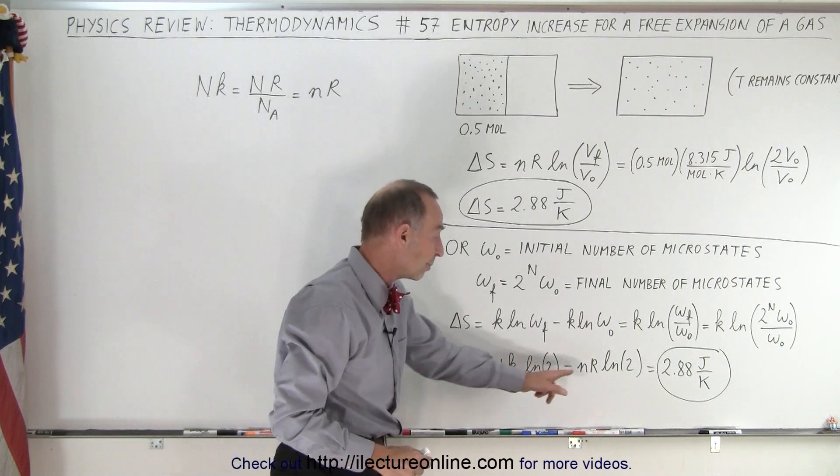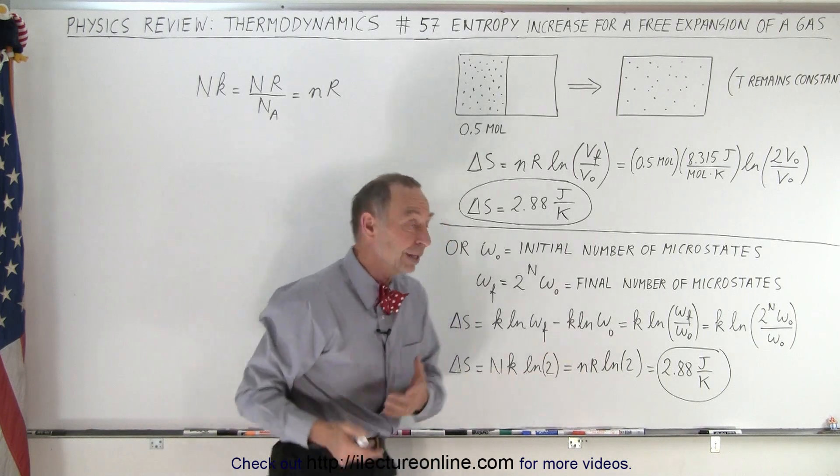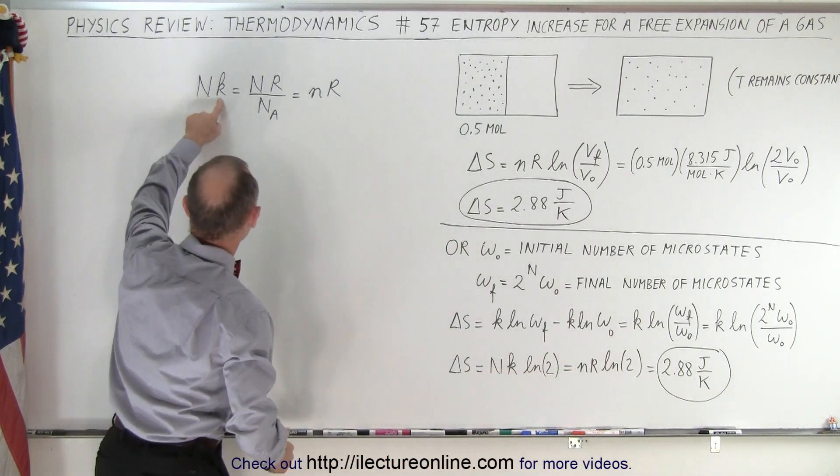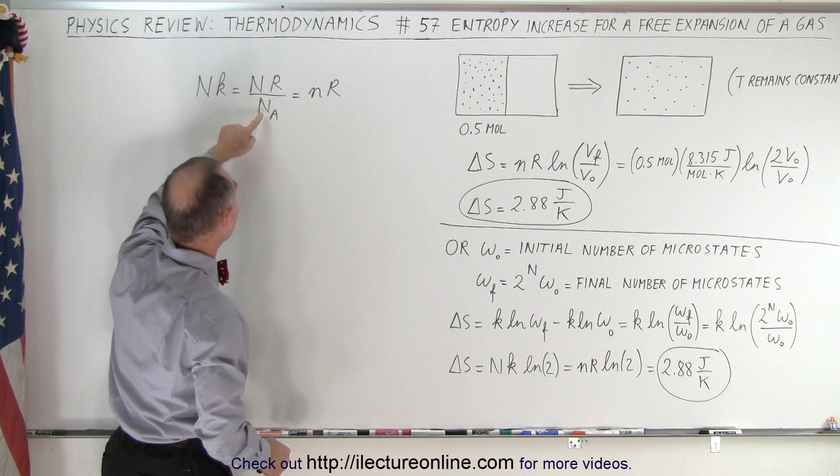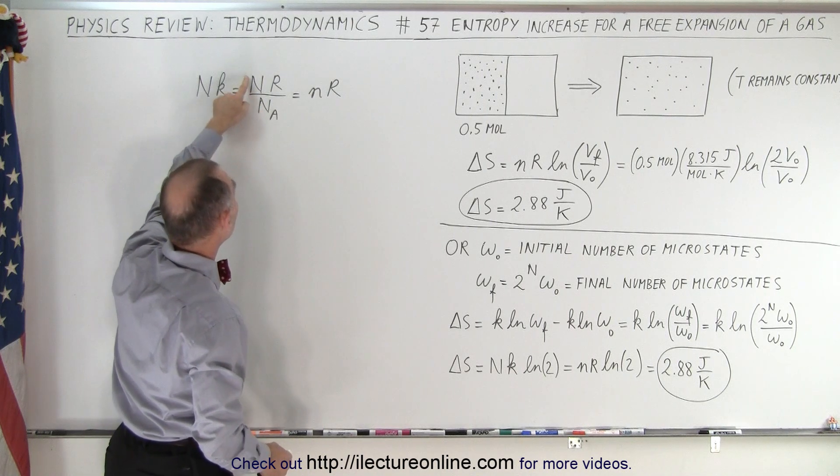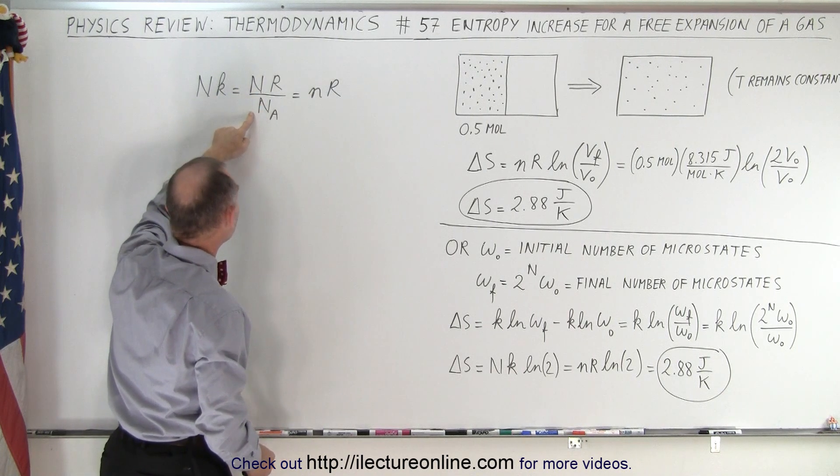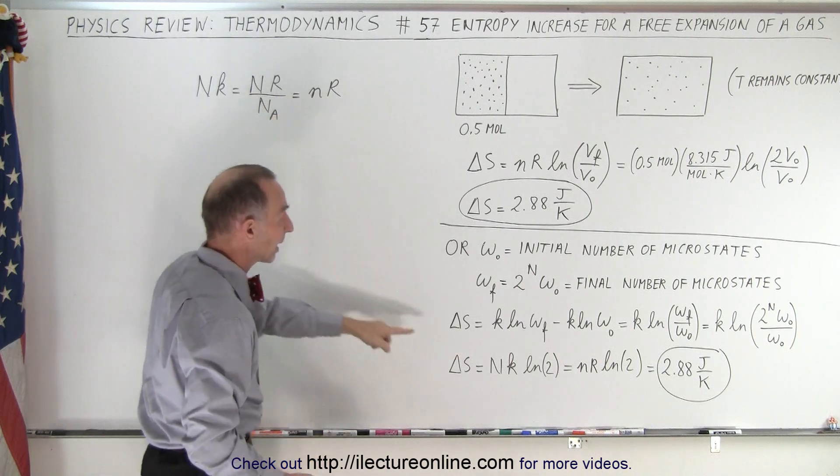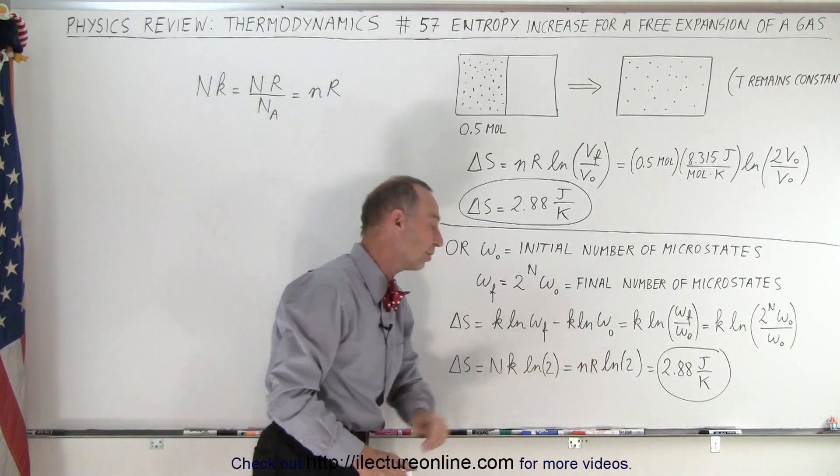And of course n times k is the same as number of moles times R. And how do we calculate that? Well notice that k is essentially the gas constant divided by Avogadro's number and the number of molecules divided by Avogadro's number gives us the number of moles. So big n times k is the same as small n times R.